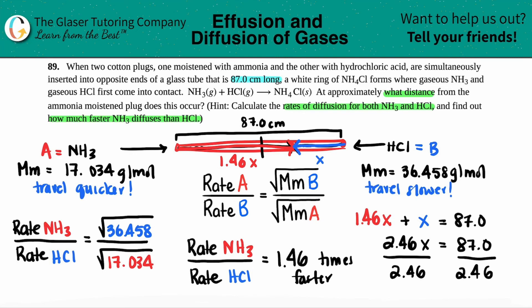2.46 gets canceled out and now we have our answer. x equals 87 divided by 2.46. We get 35.4 centimeters. That's centimeters because we were talking about distance.